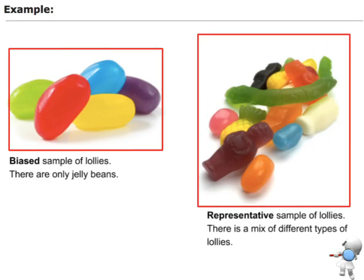Whereas on the right-hand side, I've got a mixture. I've got jelly beans, pineapples, snakes, and milk bottles. There's a mixture of different types there, and so that is a much more representative mix. That's what we want to be able to do with our sampling.